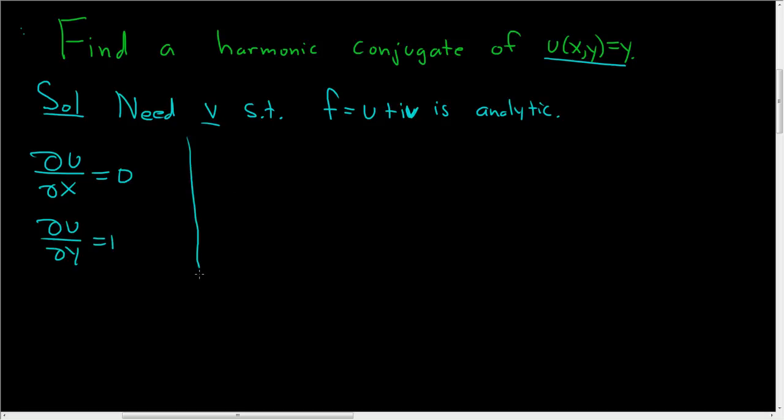So we want the Cauchy-Riemann equations to hold for u and v. So we want ∂u/∂x to be equal to ∂v/∂y. And we also want ∂u/∂y to be equal to negative ∂v/∂x.